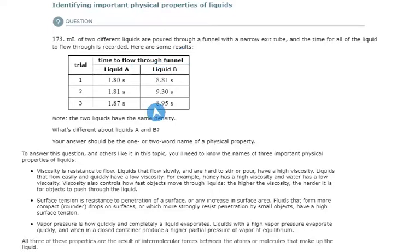So liquid A, liquid B. And we have our times for three trials. So which property, physical property of liquids of these three - viscosity, surface tension, and vapor pressure - deals directly with this keyword right here, flow?